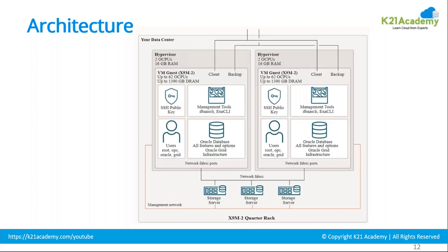Here is an inside look at the users and keys. This is your Dom0 — the last border — and in that you have the DomU, which has got your management tools, access CLI, and the DBAS CLI. It has users: opc, oracle, grid, and root. You connect via key with the opc user, and then you have sudo access to your database DomU.